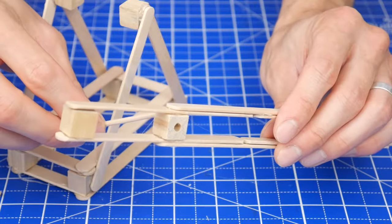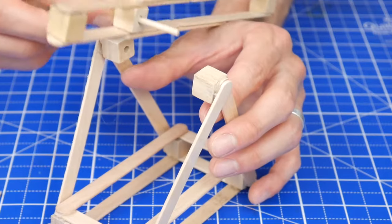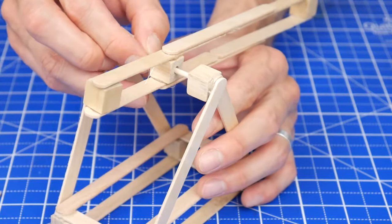Fit the dowel piece into the catapult arm cube. Then pry the sides of the catapult apart a little bit and slip the ends of the dowel into the catapult frame.